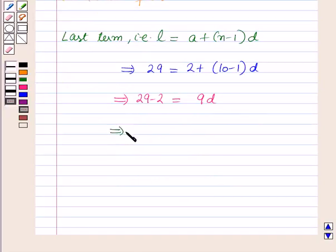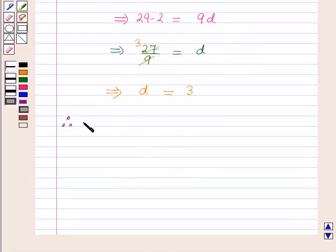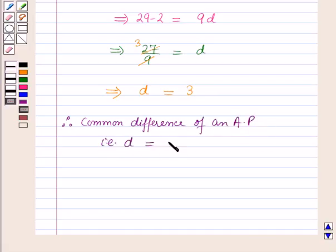This implies 27 divided by 9 is equal to D, which implies 9 times 3 is 27, so D = 3. Therefore, the common difference of an AP, that is D, is equal to 3.